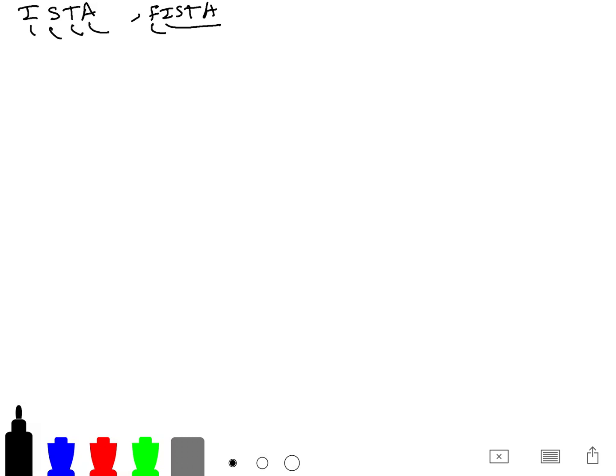Our goal is minimize f of x which is a sum of g of x which is smooth and h of x which has an easy prox operator, easy to evaluate prox operator. The subgradient method says that x_t+1 is simply x_t minus eta g_t where g_t is inside your subdifferential set.